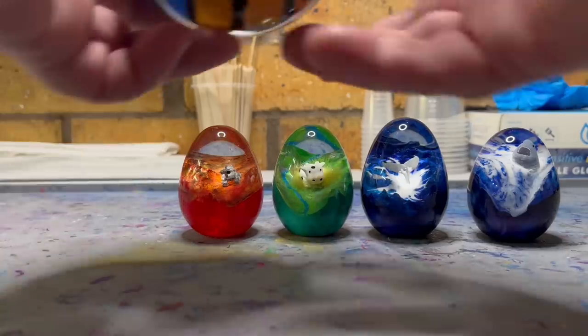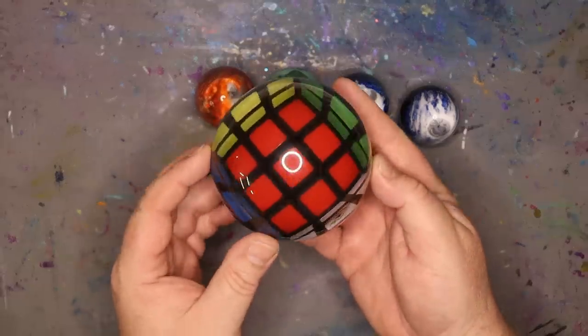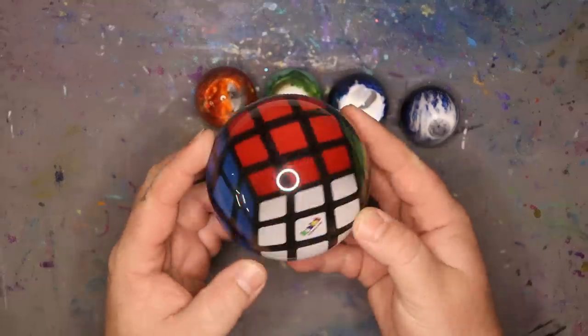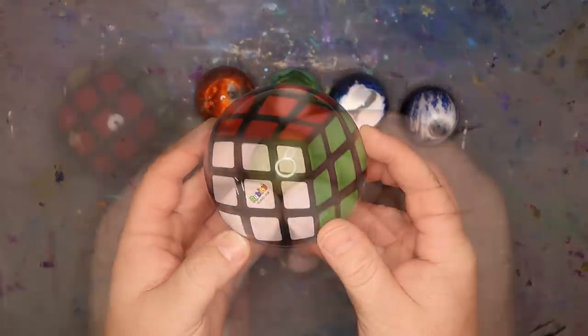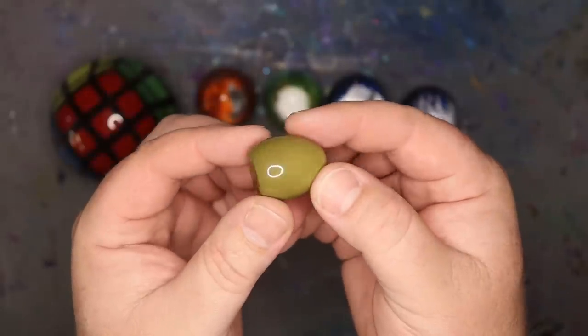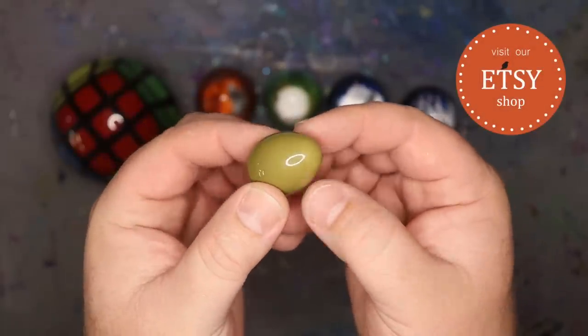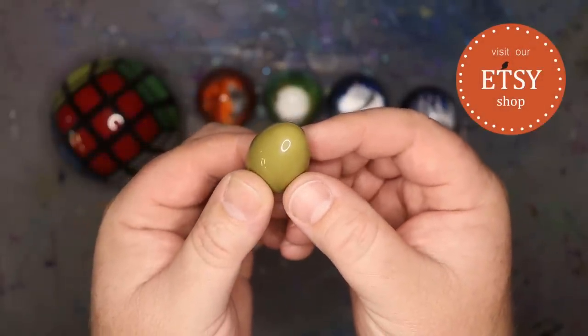And in addition to my new eggs, I've also finished a Rubik's ball. Now I know a lot of you guys have been asking for these, so this one's now available in the store. And don't forget, I'll also be adding this little brass egg into someone's order. I'll leave a link in the description if you want to check them out.